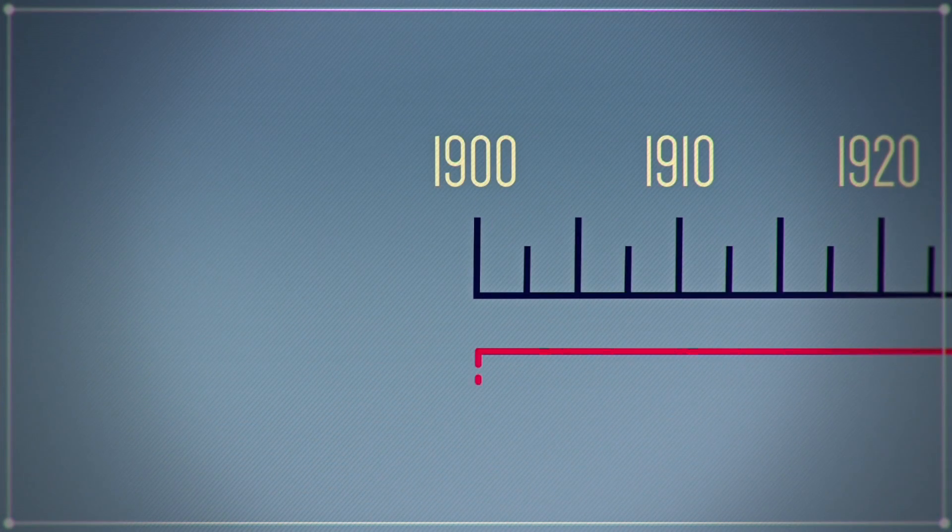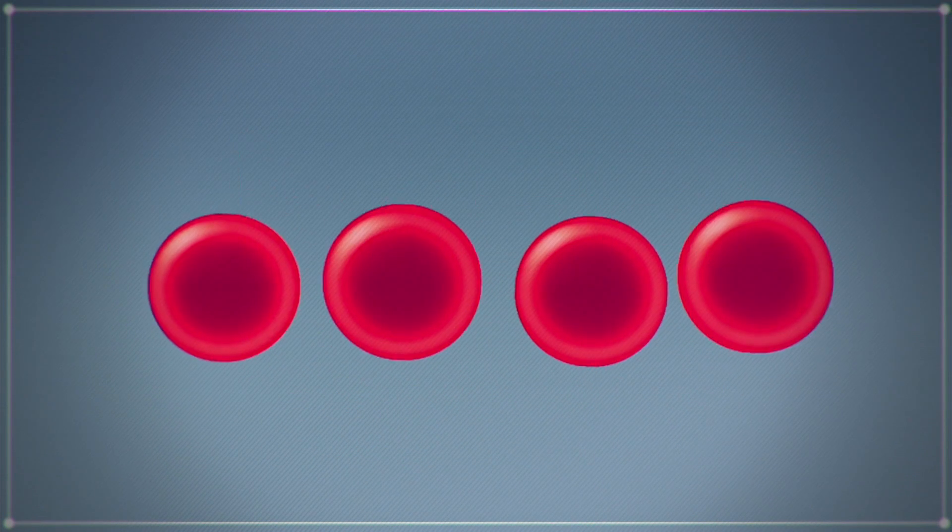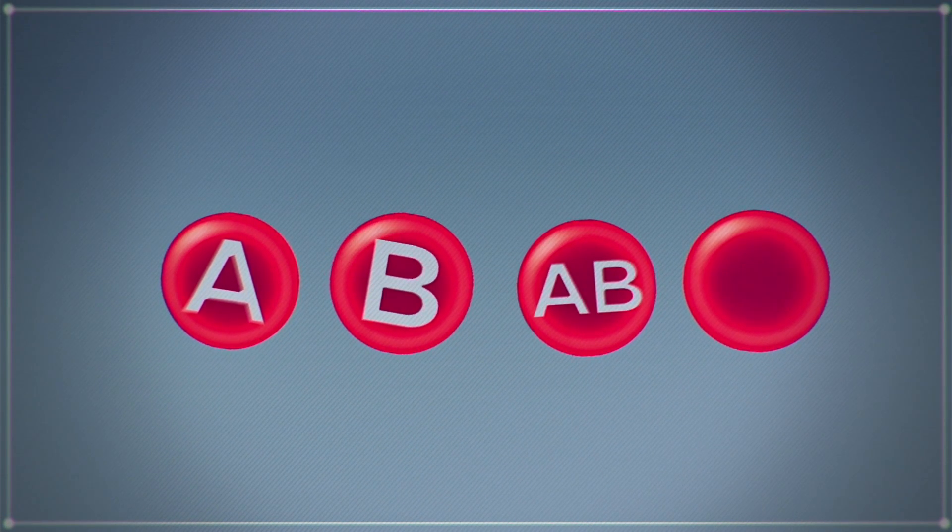Back in 1900, a scientist discovered that blood could be divided into groups. They're called A, B, AB and O.